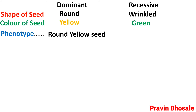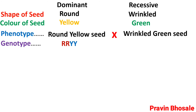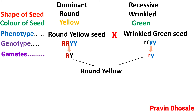The phenotype: plant producing round shape, yellow color seed is crossed with plant producing wrinkled shape, green color seed. The genotype for round yellow will be RRYY, and the genotype for wrinkled green will be rryy. Gamete formation gives capital RY and small ry. After crossing, you get round yellow heterozygous form with genotype RrYy in F1 generation. When the results of F1 generation are self-crossed, you get four types of gametes: RY, Ry, rY, and ry.